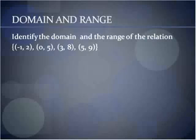Domain and range. Identify the domain and the range of each relation. If you go back to the vocab, we said that domain are the X values of your ordered pairs. So if we look through here, our X values are the negative 1, the 0, the 3, and the 5. So the domain consists of the numbers negative 1, 0, 3, and 5.